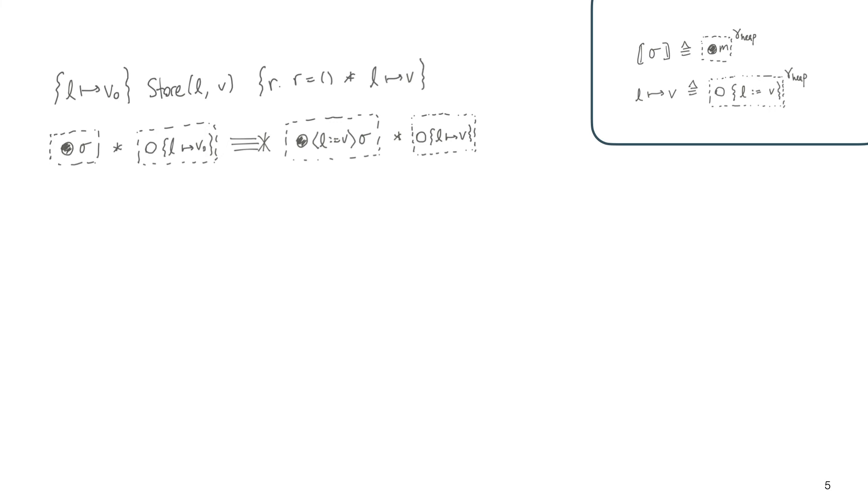So what we need to do is we need to make a view shift from the combination of the state interpretation and this element to a new state interpretation with an updated heap. And in the process, we want to get out a new fragment.